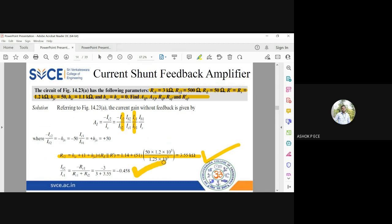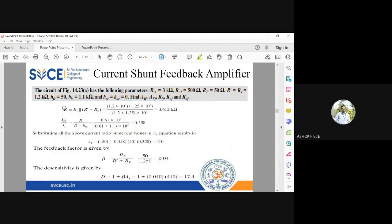Now find the input side value of R. R equals rs parallel to r' plus re, so it is 0.612 ohms. Then find ib1 by is, so it is r by r plus hie, which is 0.358.